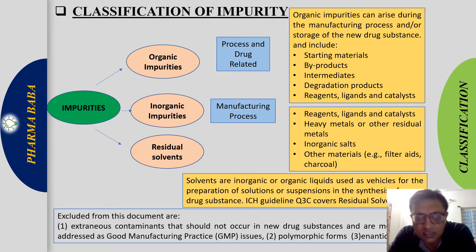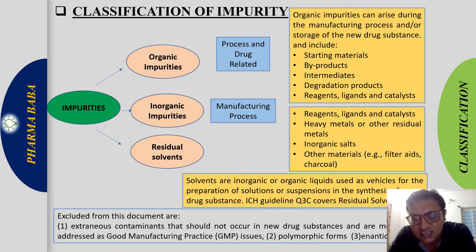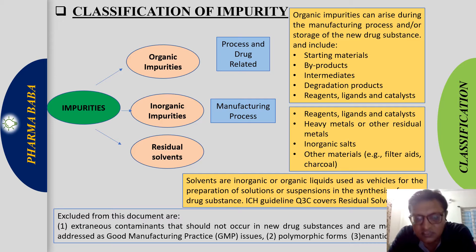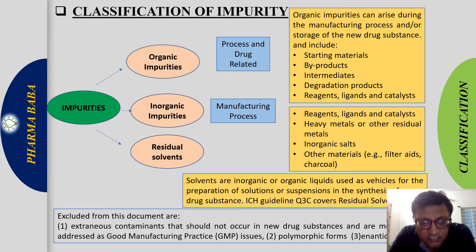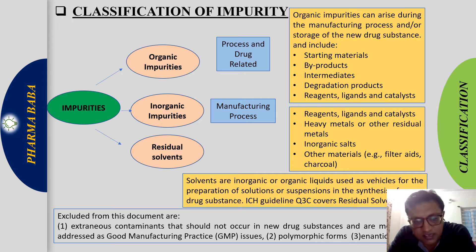Inorganic impurities are inorganic in nature and also arise during the manufacturing process. They may come from reagents, ligands, catalysts, heavy metals or other residual metals, inorganic salts, and other materials such as filter aids like charcoal used in drug substance manufacturing. Residual solvents are organic or inorganic liquids used as vehicles for preparation of solutions or suspensions in the synthesis of the drug substance.